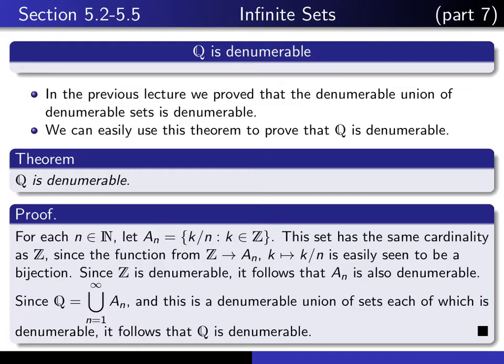The idea is that each rational number can be written as a ratio of an integer divided by a natural number, something of the form K divided by N. So what we do is we fix the denominator N, and we look at all the things of the form K divided by N.